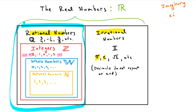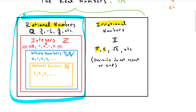Let me go over the symbols quickly. The irrational numbers have a thick I, the rational numbers have a thick Q, the integers have a thick Z as their symbol, and the whole numbers have a thick W. Whole numbers are integers but without the negatives, so they include zero, one, two, three, and up. Natural numbers are the next subgroup and they drop off the zero and just have one, two, three, and on up. Often these natural numbers are also called counting numbers because you count with natural numbers.